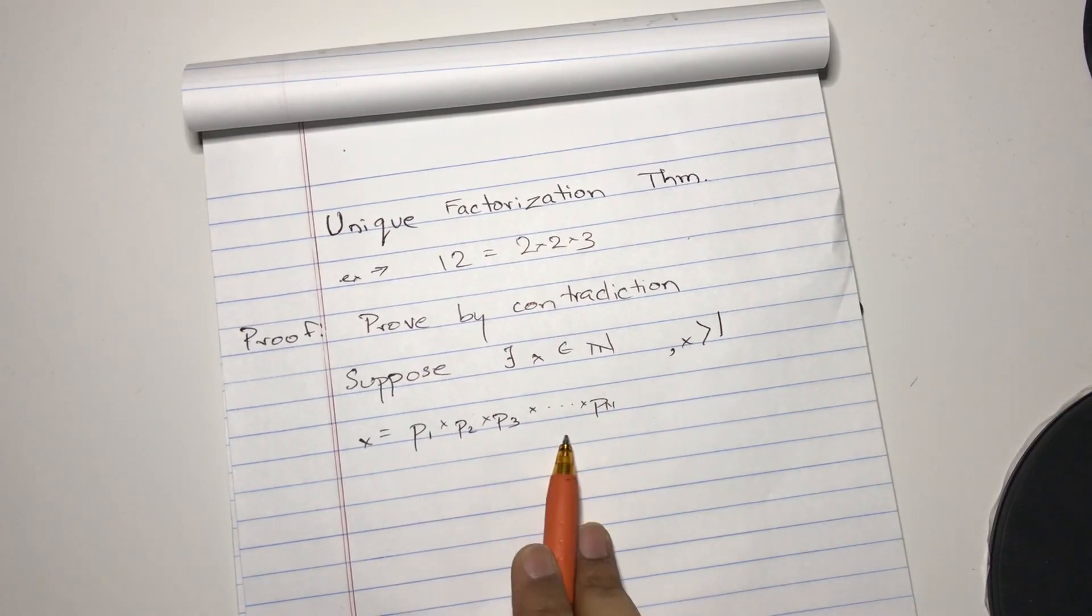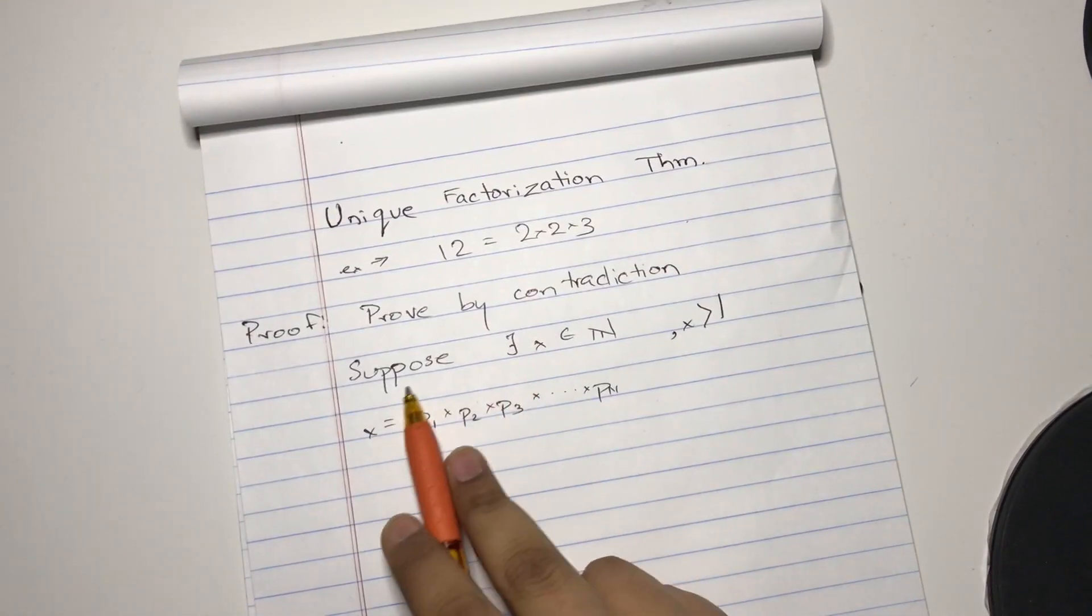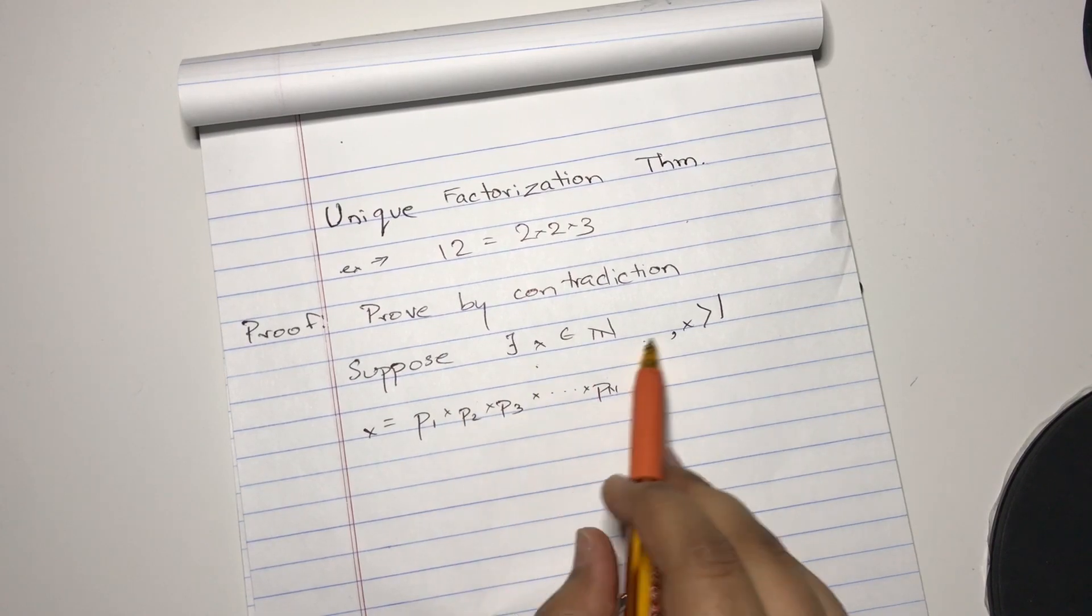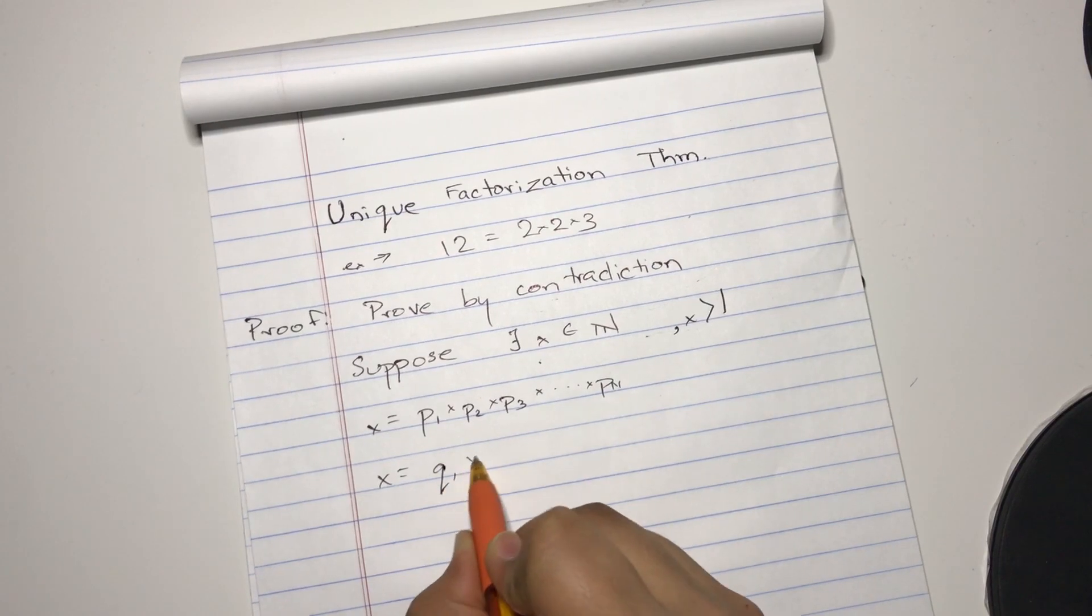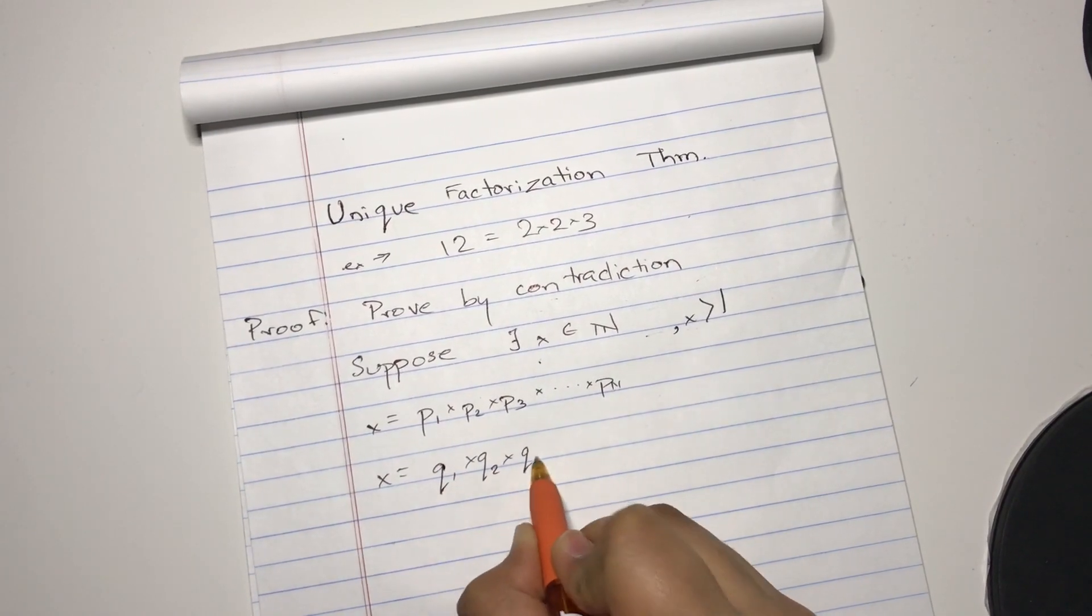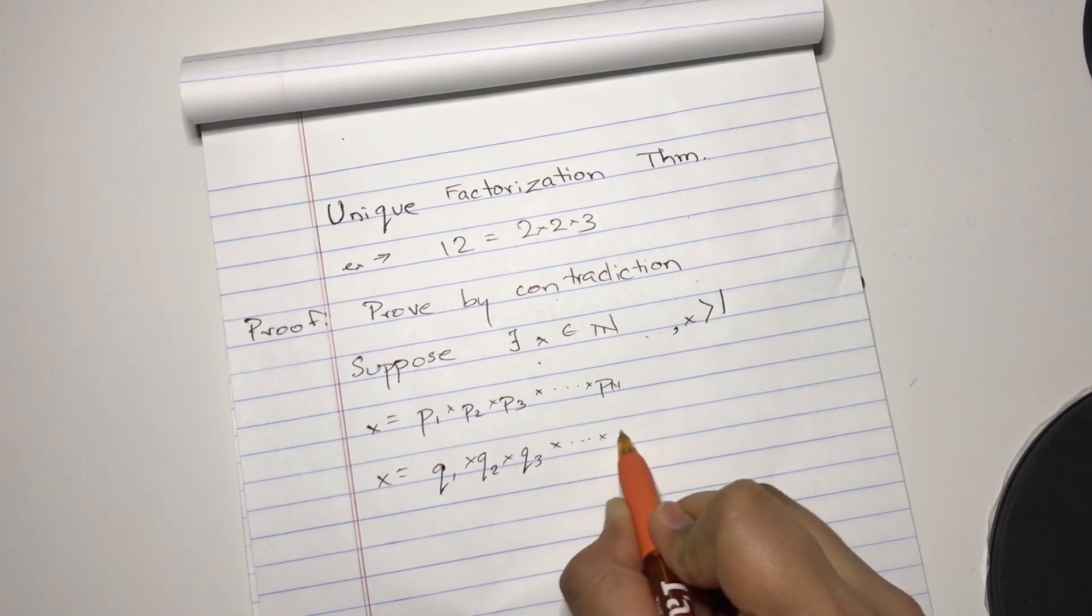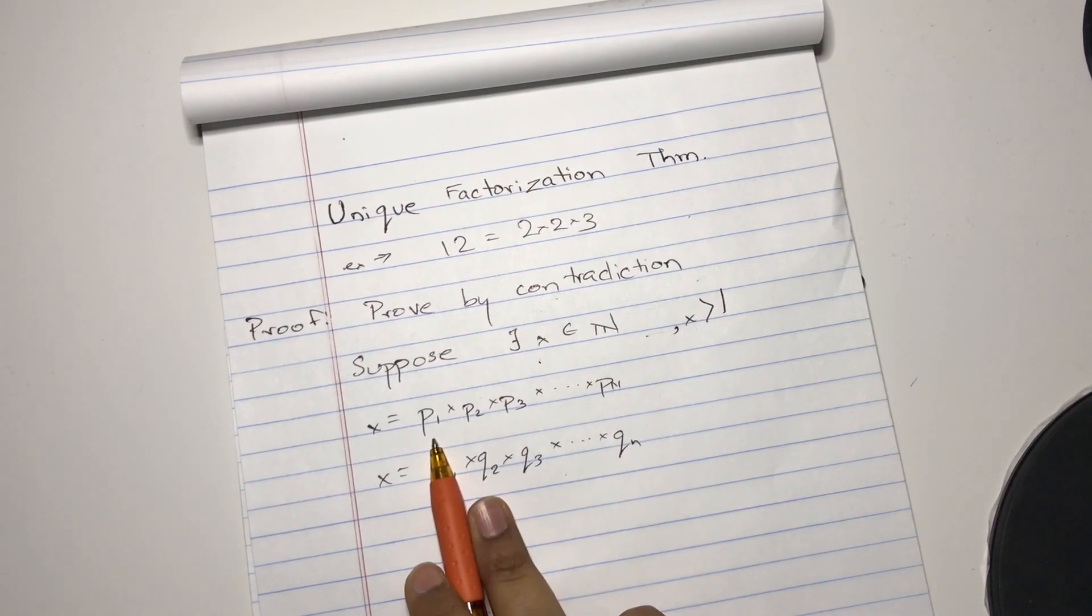So these p's are primes. And since there exists a number, I'm going to do a contradiction. So x can also be expressed as q1 times q2 times q3 all the way to qn. So all these q's are also primes, and they're different from the p's.